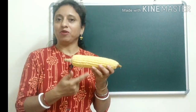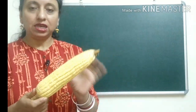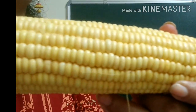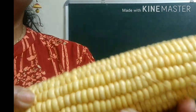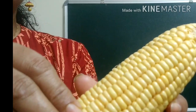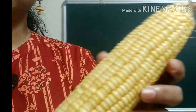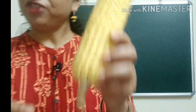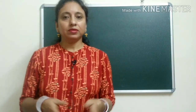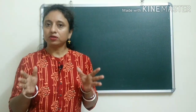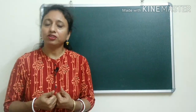To understand the cells and tissues, we can take the help of this corn. If we imagine these individual kernels as cells, one after another the cells join together and make a tissue. Then those types of tissues join together and make an organ. So we can say an organ is a group of special types of tissues which performs a specific job for your body.